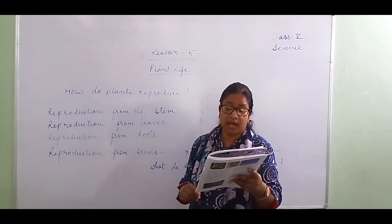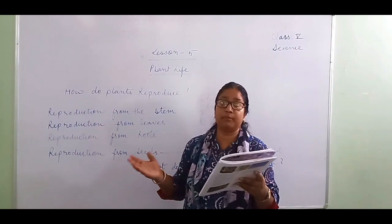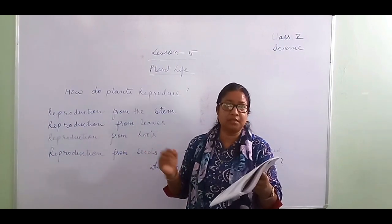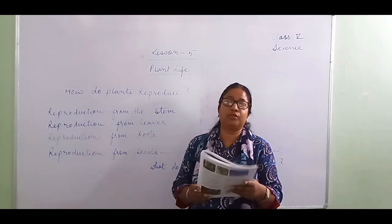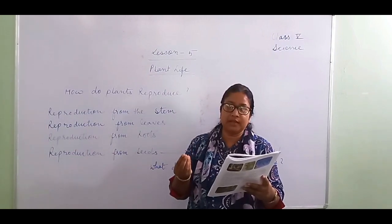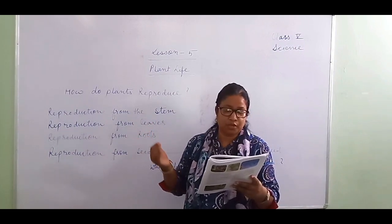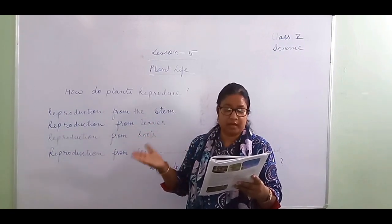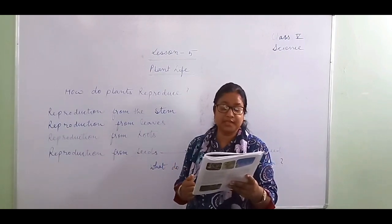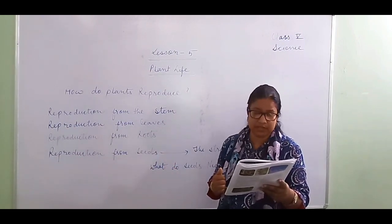Most of the plants we see around us reproduce through seeds. If you see the mango tree, orange tree, or lemon tree, you can see that from the lemon seeds, new plants grow. So many plants around us reproduce through seeds. Some plants can reproduce from body parts such as leaves, stem, and root.